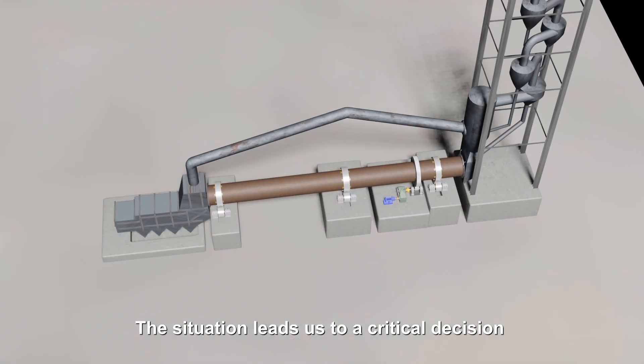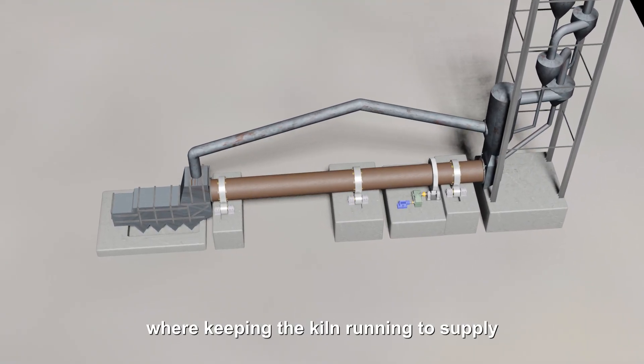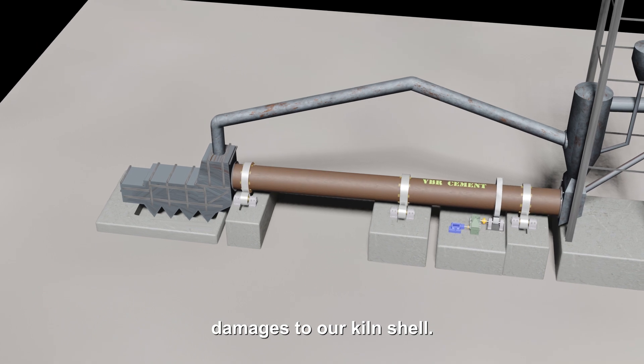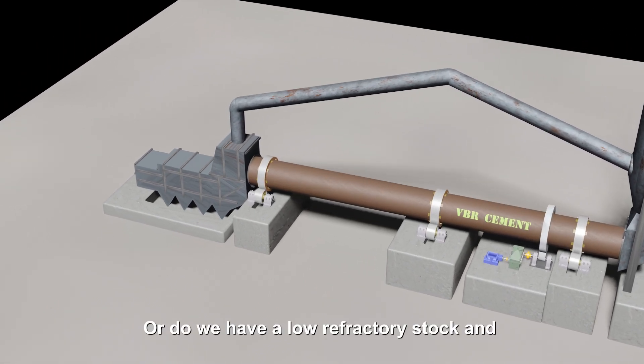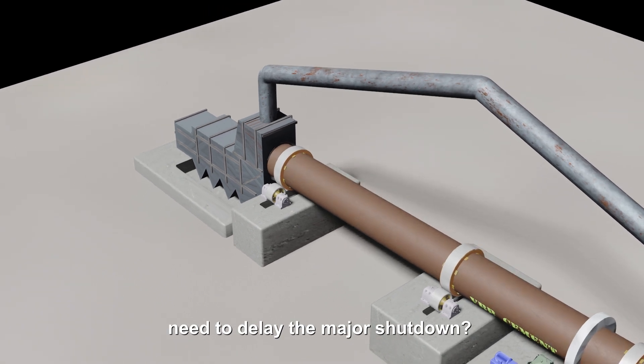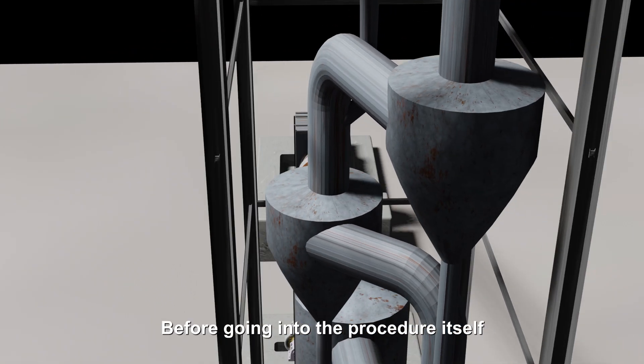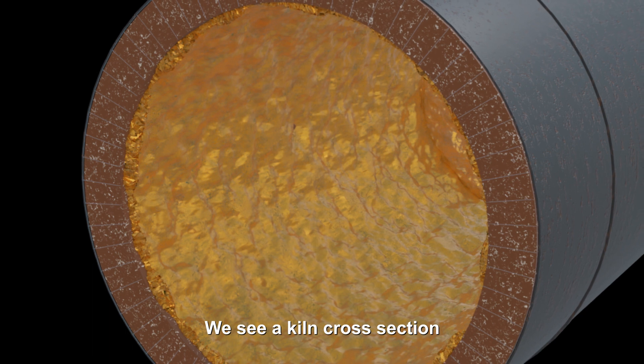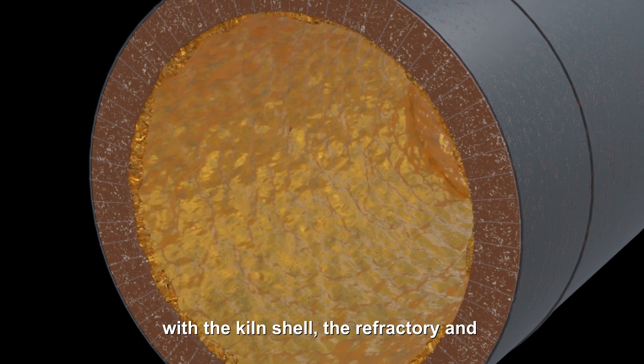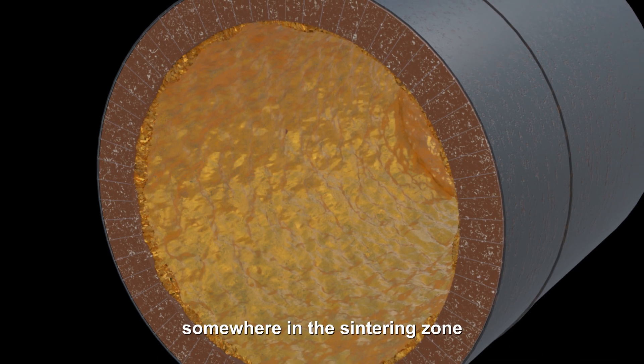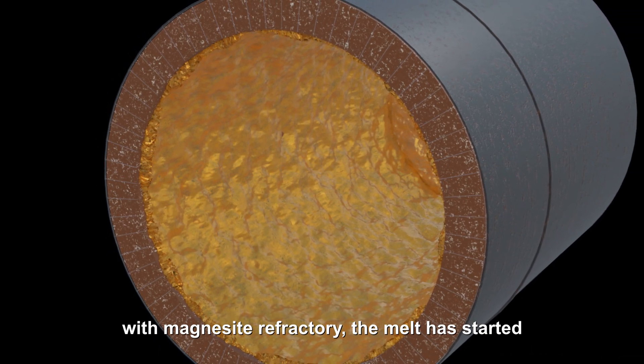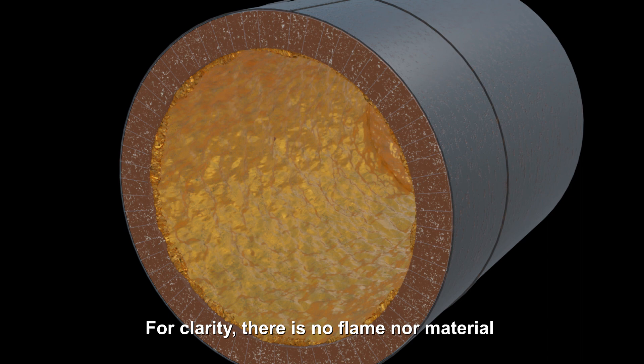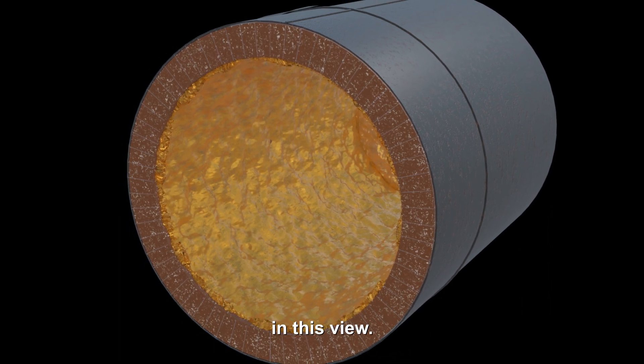The situation leads us to a critical decision: where keeping the kiln running to supply a high cement demand may cause permanent damages to our kiln shell, or do we have a low refractory stock and need to delay the major shutdown? Before going into the procedure itself, let us have a look into the kiln to better understand what will happen. We see a kiln cross section with the kiln shell, the refractory, and a bit of coating somewhere in the sintering zone with magnesite refractory. The melt has started and clinker phases are in the making. For clarity, there is no flame nor material in this view.